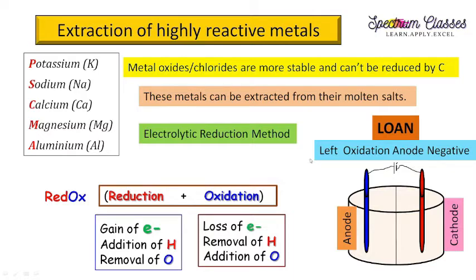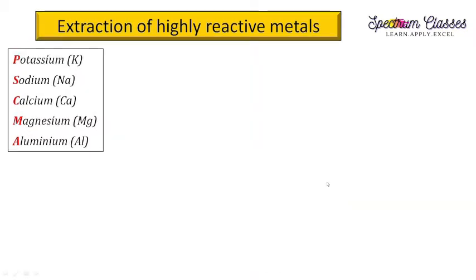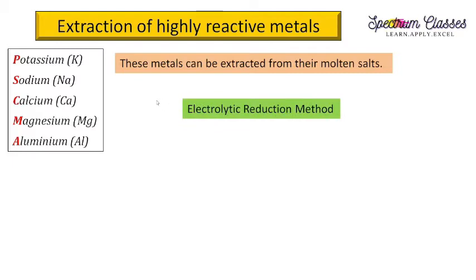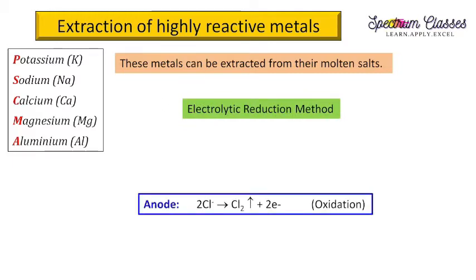The negative terminal is connected to the positive terminal of the battery — this is the basic concept of cell formation. This is just a representation to give an idea of how the anode and cathode work. Now, taking the example of extraction of sodium from sodium chloride: through electrolytic reduction, oxidation is taking place at the anode.